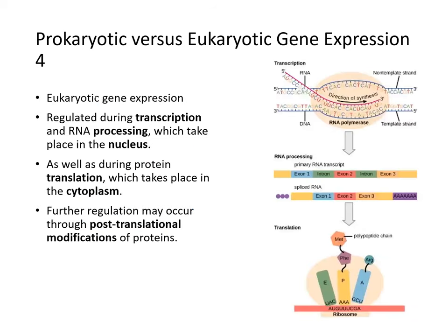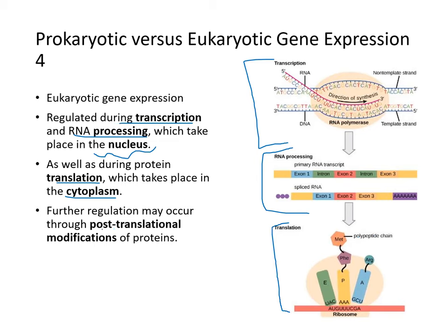Eukaryotic gene expression is regulated during transcription and RNA processing — taking place in the nucleus — as well as during protein translation in the cytoplasm. Once the protein is made, further post-translational modification can occur, for example in the Golgi apparatus, which processes proteins and adds glycoproteins, sugar molecules, lipid molecules, and so forth.